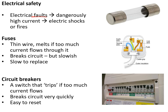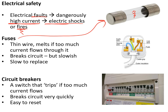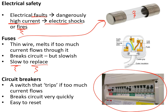When electrical equipment develops faults it can lead to dangerously high currents that can cause electric shocks or fires. To protect against this, plugs have fuses — a thin metal wire that melts when too much current flows, breaking the circuit. The advantage is safety, but the disadvantage is it can be slow and you have to replace the fuse. An alternative is circuit breakers: if too much current flows, a switch flips and cuts the circuit super quickly, and it is easy to reset by flicking the switch back up.